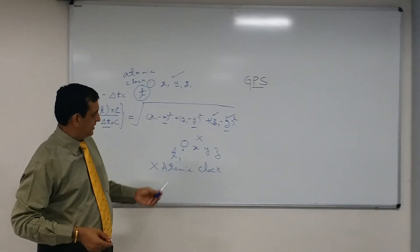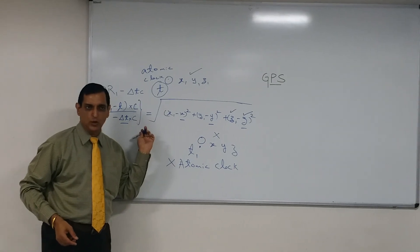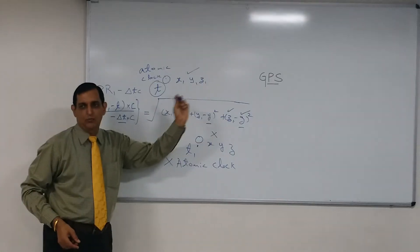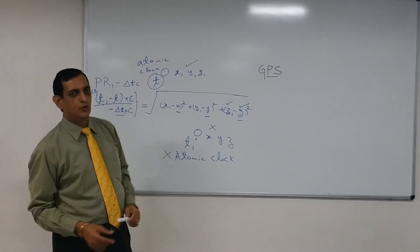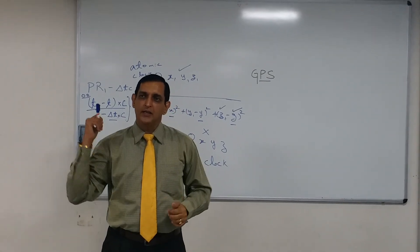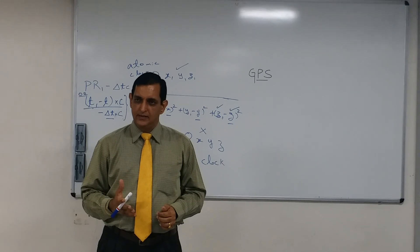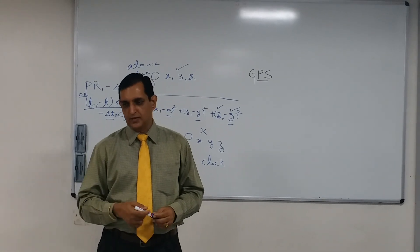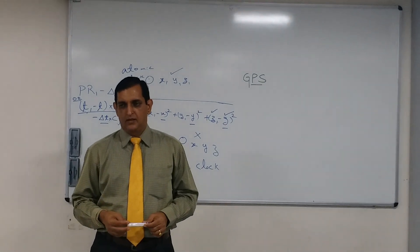So, technically both these, the delta D in terms of user clock and the satellite clock, both these errors actually do not affect the accuracy of the position. They are calculated and applied.